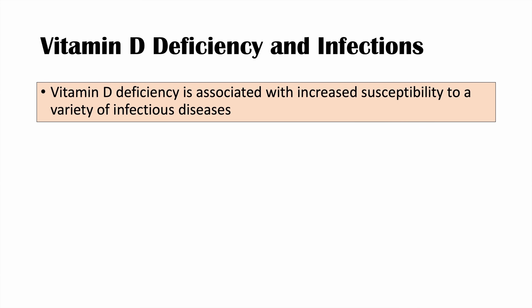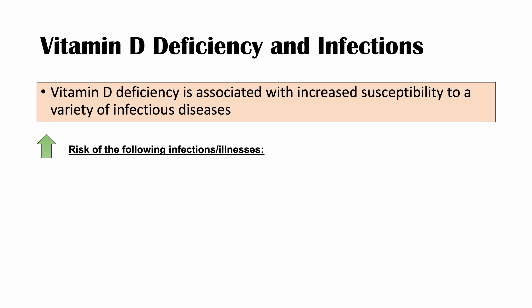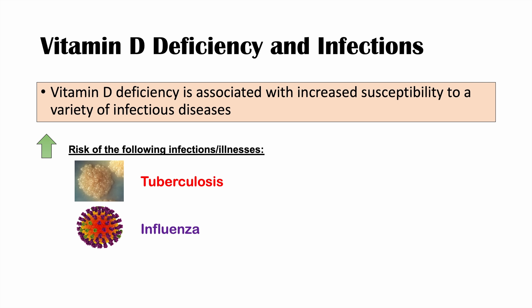So vitamin D deficiency and infections. Vitamin D deficiency is associated with increased susceptibility to a variety of infectious diseases. One of those infections is tuberculosis. At the advent of research into treatments for tuberculosis, it was found that vitamin D actually reduces morbidity associated with tuberculosis. Another infection associated with vitamin D deficiency is influenza.